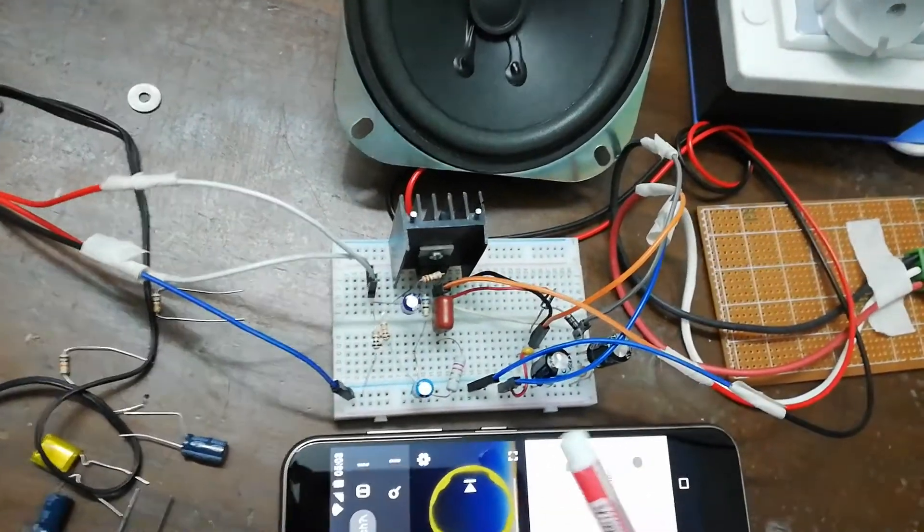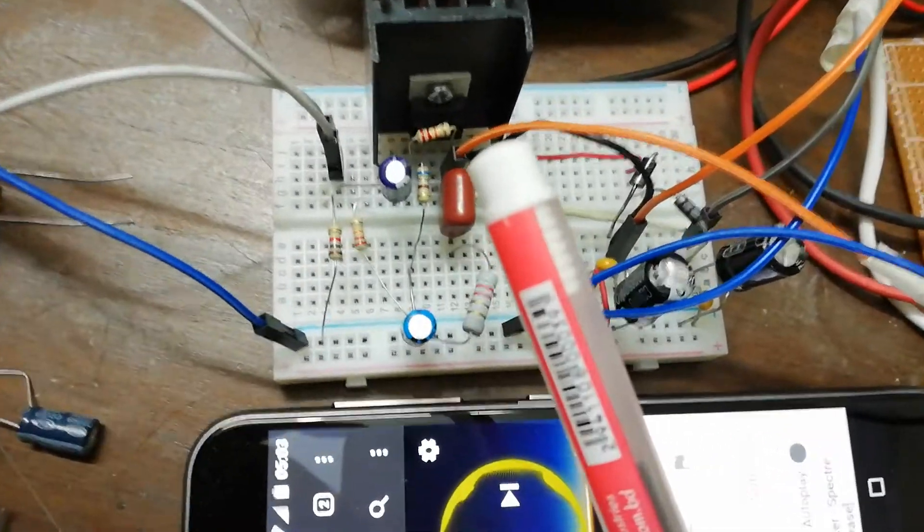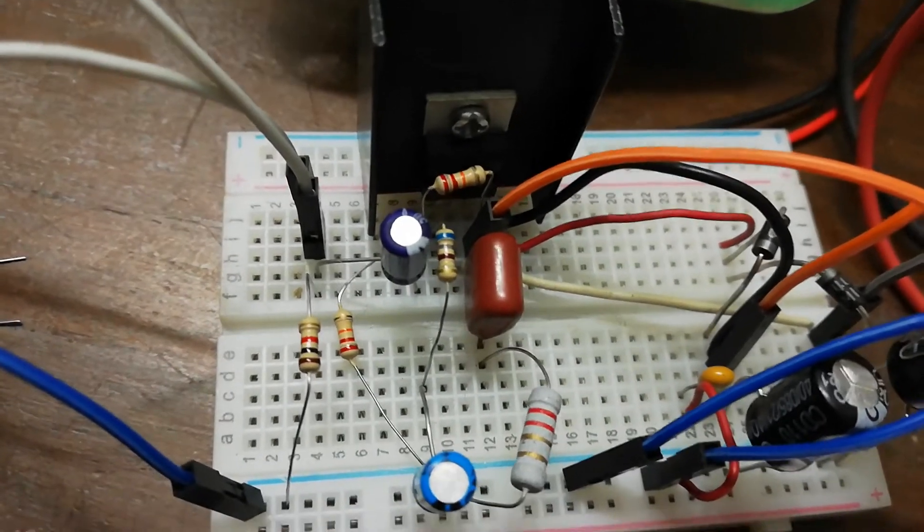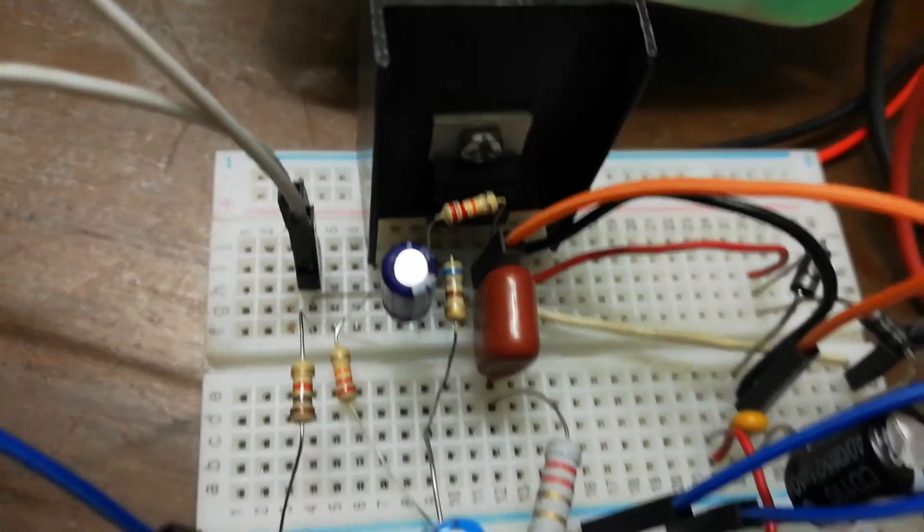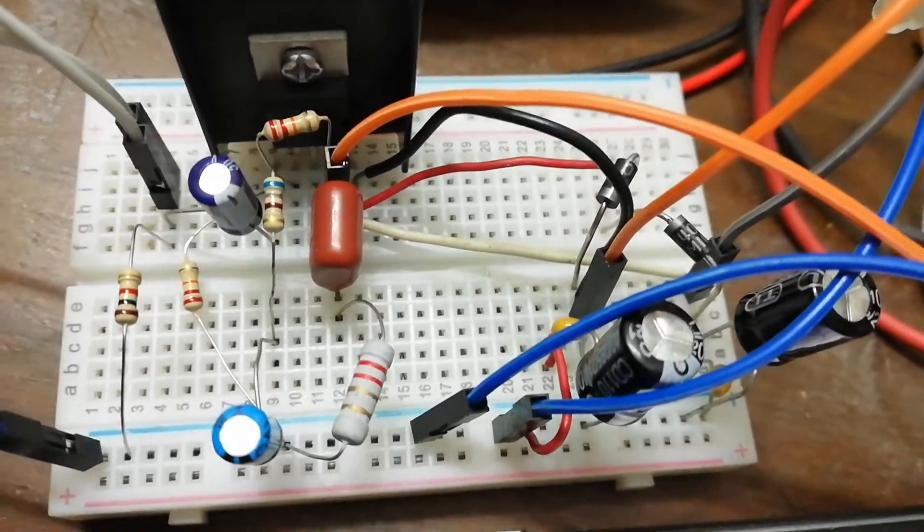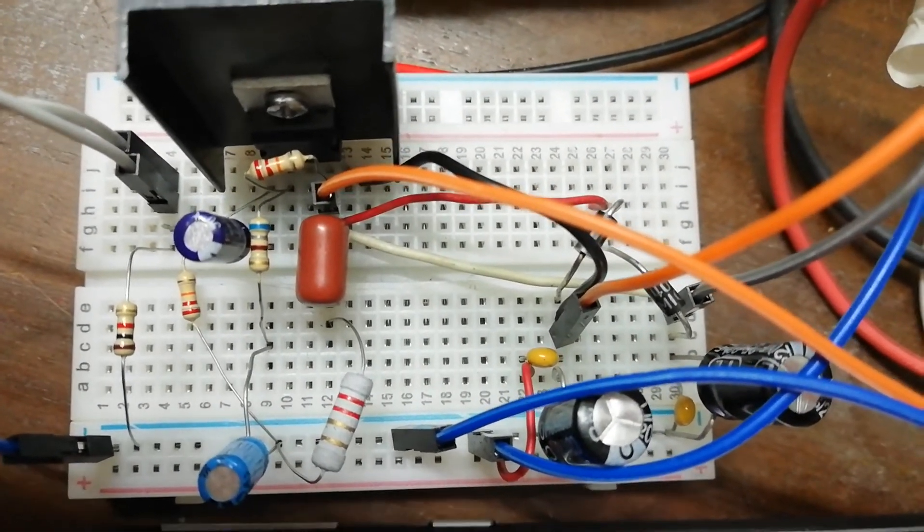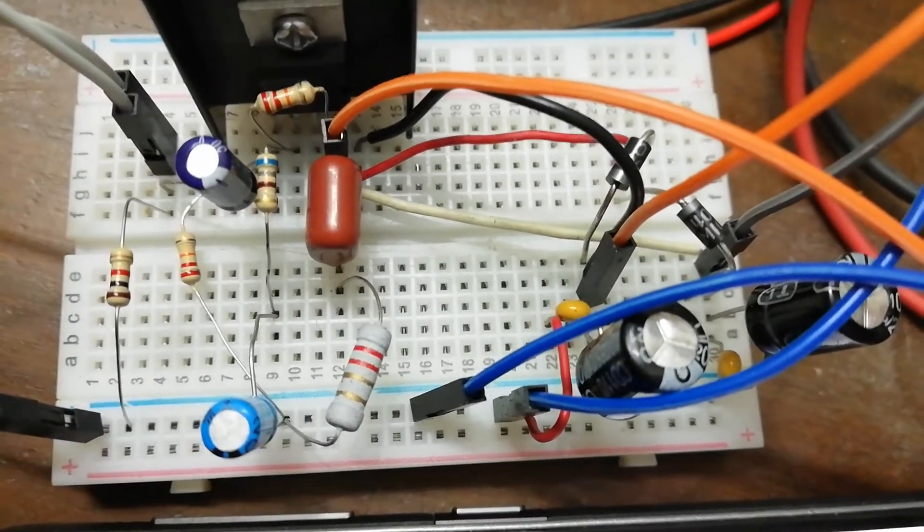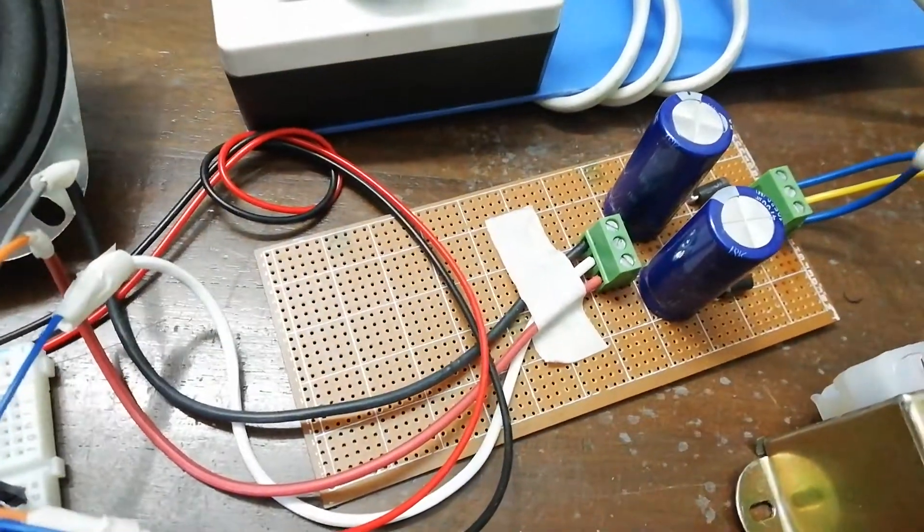If you look closely to the breadboard, here is the IC. And you can see 220 nanofarad capacitor, resistors, and other components that I explained earlier according to the circuit diagram. I arranged everything to the breadboard. Here is the diode and 104 capacitor here.